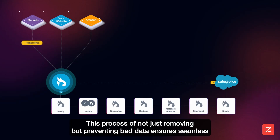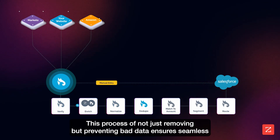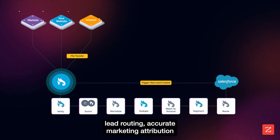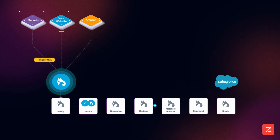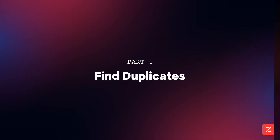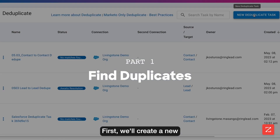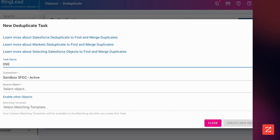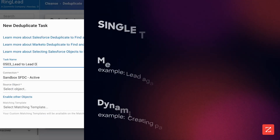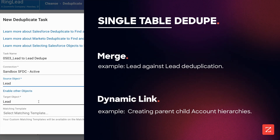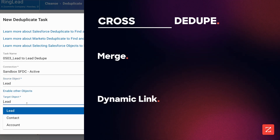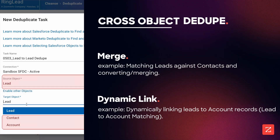This process of not just removing, but preventing bad data ensures seamless lead routing, accurate marketing attribution, and an overall frictionless go-to-market engine. First, we'll create a new deduplication task and select lead as both our source and target object. As you can see, we can dedupe any standard or custom object and also match data at the cross-object level.